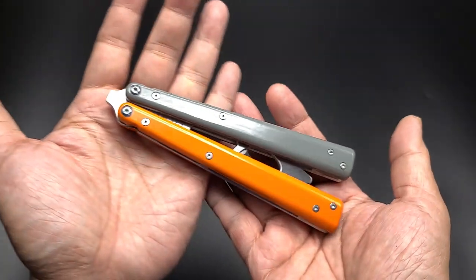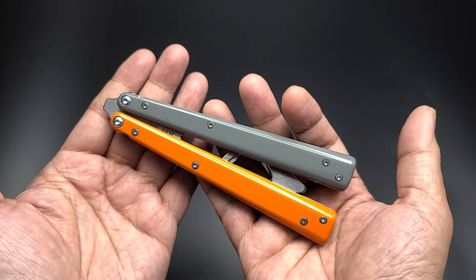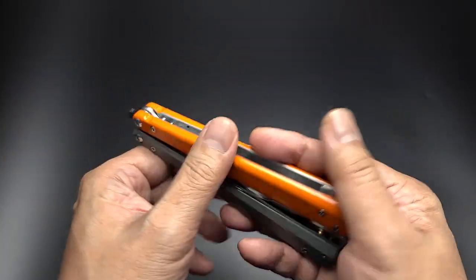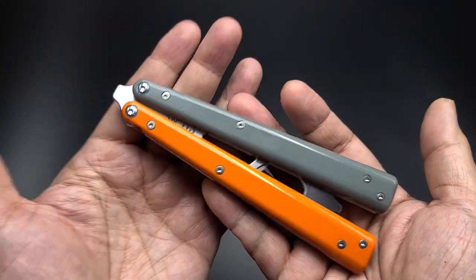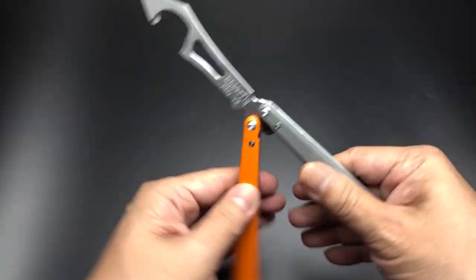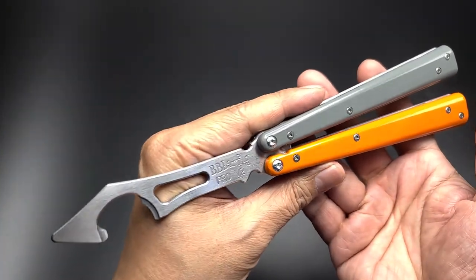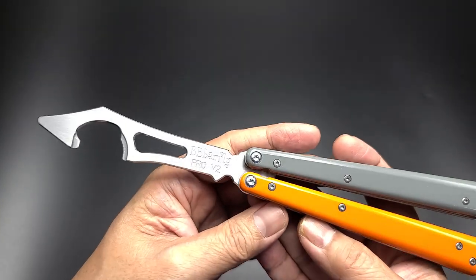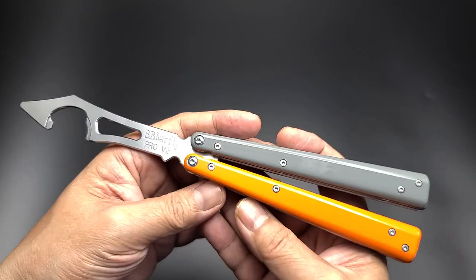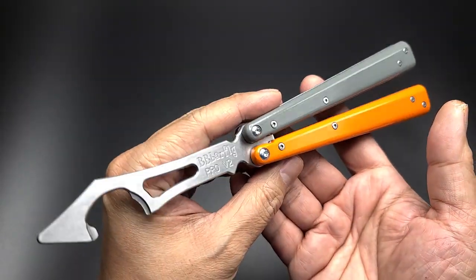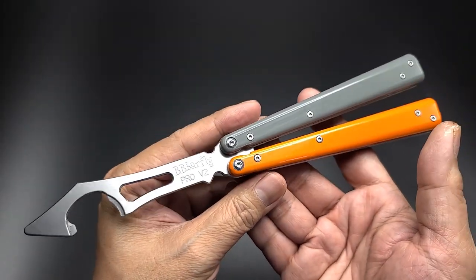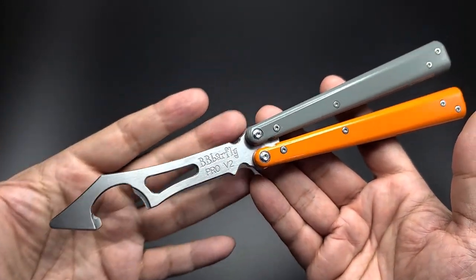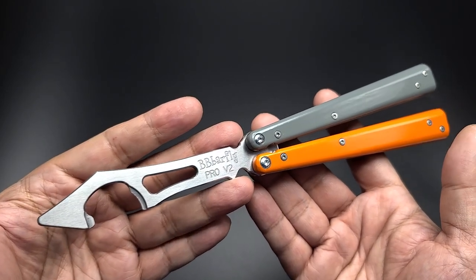Hello folks, I got a new butterfly balisong knife for you. Well, it's not a knife, it's a bottle opener. This is the BB Barfly Pro Version 2. You might have seen this already if you follow them on Instagram. I did a review on their Version 1 of the Pro a couple years ago and they were kind enough to send me the latest version for my social distancing series. So thank you BB Barfly, pretty awesome.